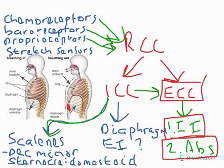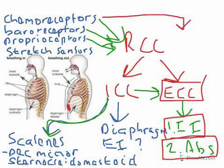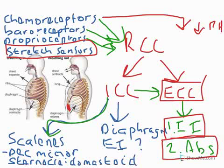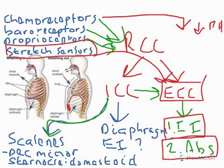A couple of key exam points: when discussing chemoreceptors, baroreceptors, and proprioceptors, you must state what they are detecting and whether it is going up or down. During exercise, chemoreceptors detect a lower pH or more acidic blood environment; baroreceptors detect an increase in pressure; proprioceptors detect an increase in tension. You might wonder about stretch receptors — these exist within the lungs themselves. When the lungs are filling to a significant degree, they prevent further deepening of breathing and instead increase the rate of breathing. The stretch receptors inform the inspiratory control centre to activate to make breathing faster, and this is called the Hering-Breuer Reflex.